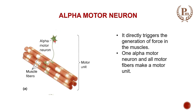Once the alpha motor neuron is stimulated, impulses travel along the axon, reach the neuromuscular junction, and trigger neuromuscular transmission. Local potentials are generated; once they reach threshold, a muscle action potential arises. This action potential travels via the sarcolemma to the T-tubule, causing release of calcium ions, which in turn causes skeletal muscle contraction through excitation-contraction coupling.